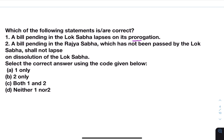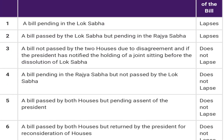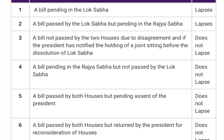The dissolution of Lok Sabha is followed by lapsing of all business including bills, motions, resolutions, notices, petitions, and anything pending before it or its committees. However, there are a few bills which do not lapse even on dissolution. A bill pending in the Lok Sabha lapses. A bill passed by the Lok Sabha but pending in the Rajya Sabha also lapses, but a bill not passed by the two houses due to disagreement where the President has notified the holding of a joint sitting before dissolution does not lapse. A bill pending in the Rajya Sabha but not passed by the Lok Sabha does not lapse. A bill passed by both houses but pending assent of the President does not lapse, and a bill passed by both houses but returned by the President for reconsideration does not lapse.